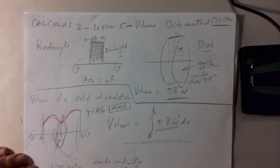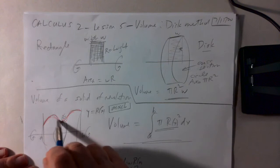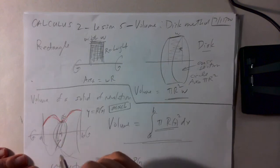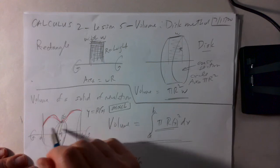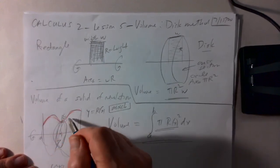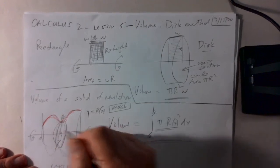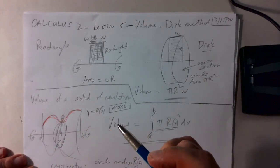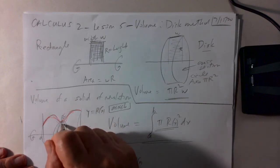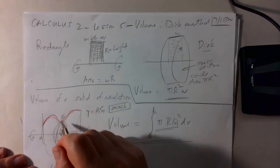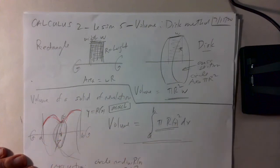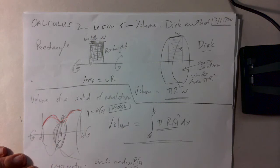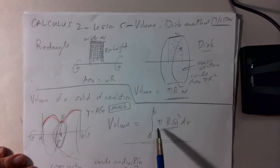We can generalize this. Suppose we have some function y = R from A to B — for simplicity, a non-negative function. When you rotate it around the x-axis, it sweeps out a solid of revolution. At any point x, the cross-section is a circle of radius R, with area π R². Integrating that from A to B gives the volume: the integral from A to B of π R².